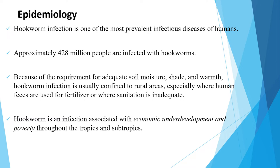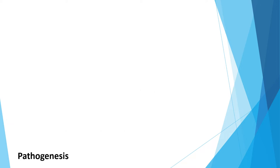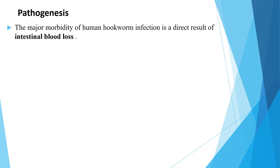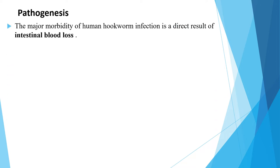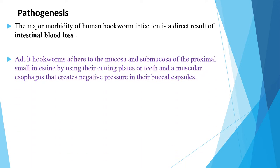Hookworm is an infection associated with economic underdevelopment and poverty throughout the tropics and subtropics. Regarding pathogenesis, the major morbidity of human hookworm infection is a direct result of intestinal blood loss. Adult hookworms adhere to the mucosa and submucosa of the proximal small intestine.